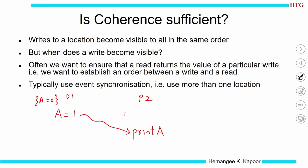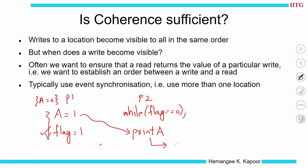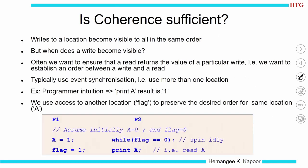To ensure the correct output, we need to establish a synchronization event. What I will do is use a flag — I put a while loop in P2 saying while the flag is 0 keep waiting, and in P1 we make flag equal to 1. As long as the flag is 0, P2 will not come out of the while loop. Whenever P2 exits the while loop, it knows flag equal to 1 would have executed, and by programmer's intuition this order is maintained — the value printed will be equal to 1.